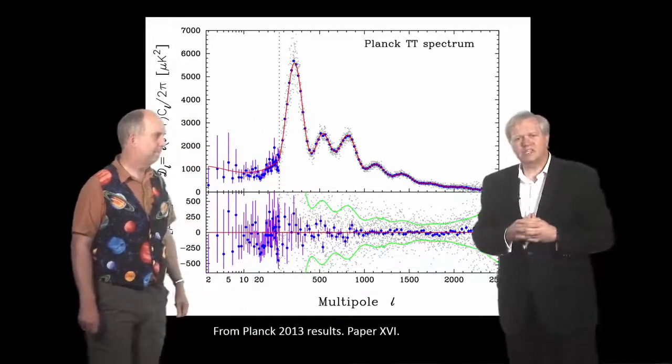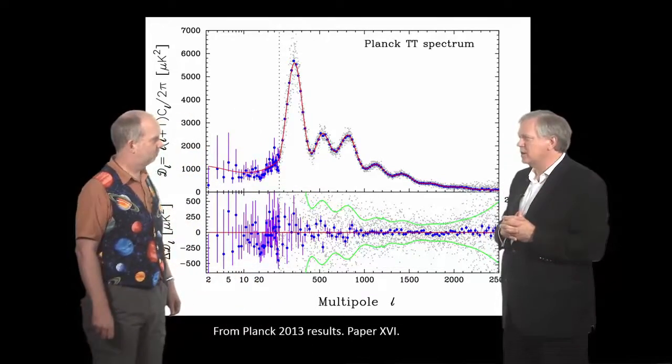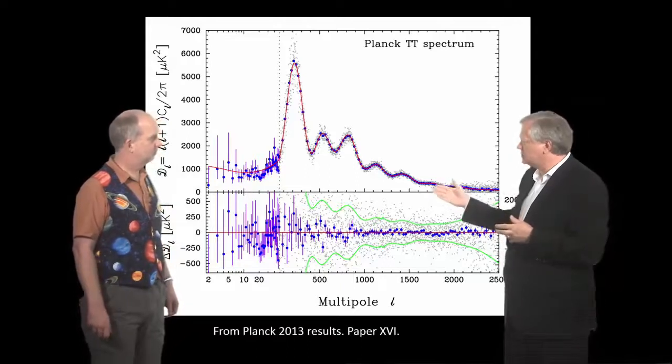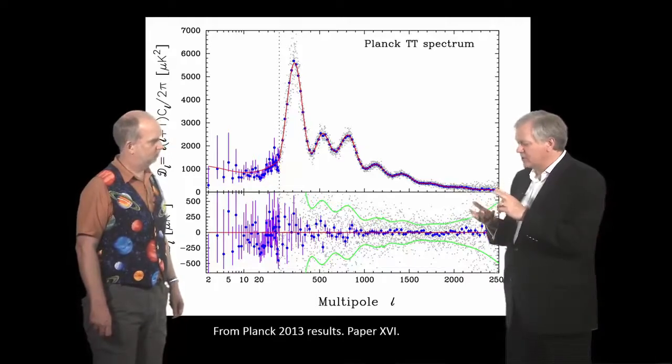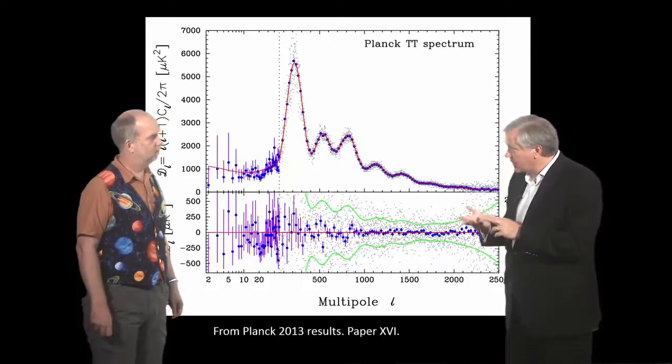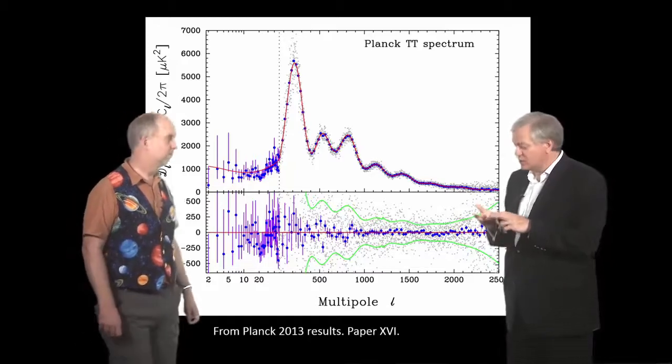And essentially whenever you can predict something in advance that well, there's really no way around it. And this model has baryons in it. Fine. We know about those on Earth. It has omega matter, dark matter.